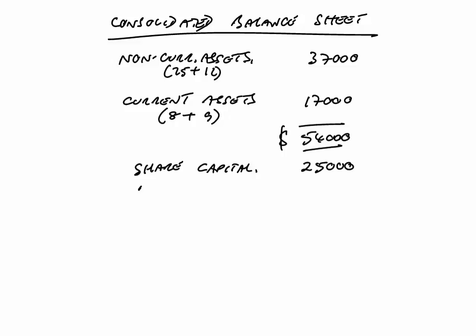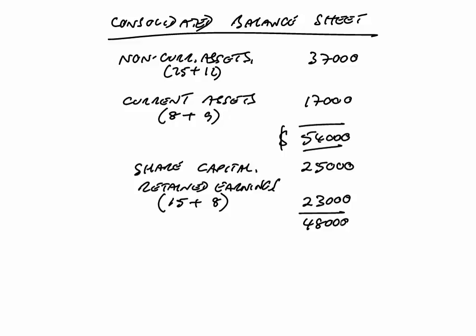Of course, shareholders are owed more because of retained earnings. How much profit belongs to my shareholders? They're entitled to all the profit in P — 15,000 — and in addition, because my company owns S, they're entitled to all the earnings of S as well, another 8,000, making a total of 23,000. So in total my shareholders are worth 48,000. For current liabilities, we simply add up for the group as a whole: P owes 3,000, S owes 3,000 as well, a total of 6,000.